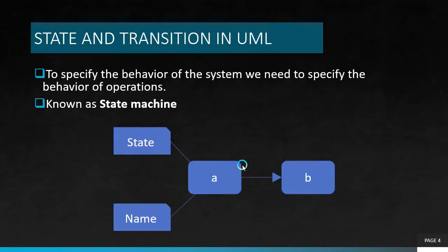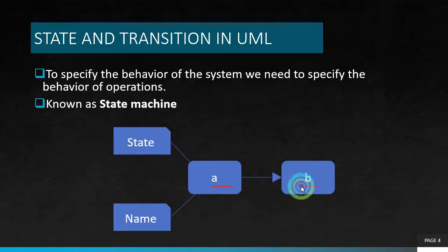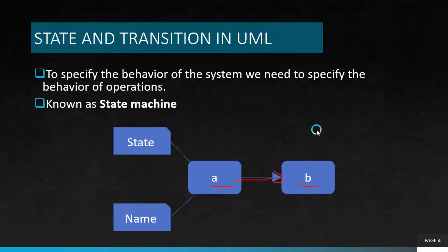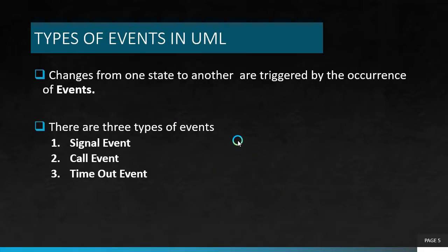First of all, we have to look at state and transition in UML. The basic component of a behavioral description of a system is nothing but the states. Here we have a state A and another state B. Going from state A to state B is known as the transition, and this kind of description is known as the state machine. To trigger such transitions, we need some kind of actions, and those actions are known as events.